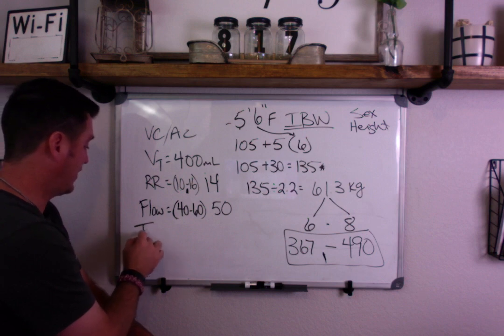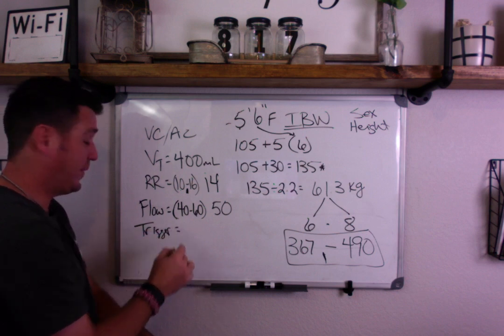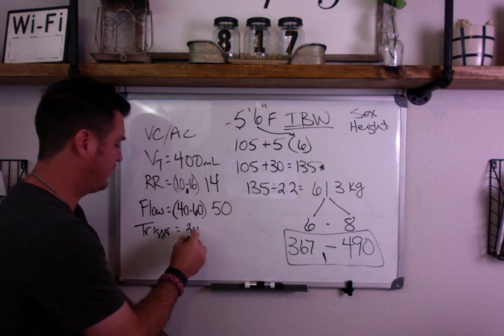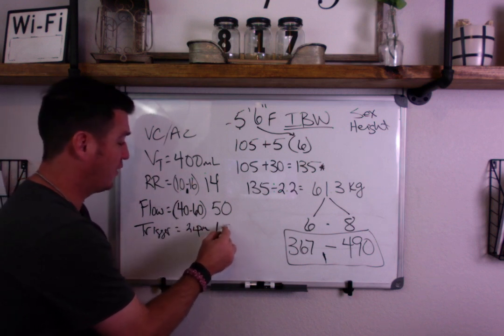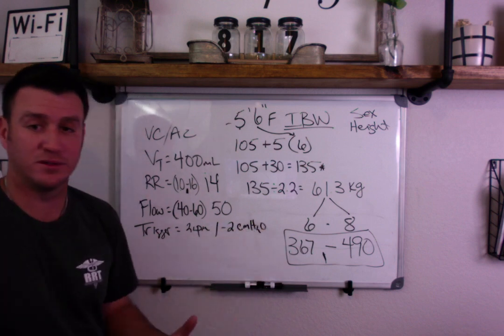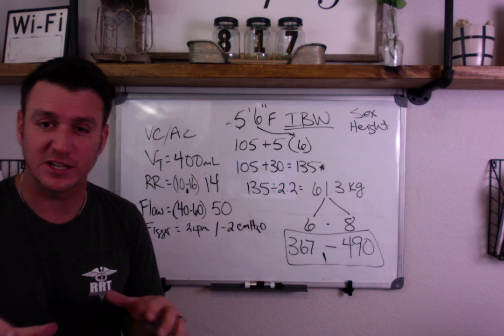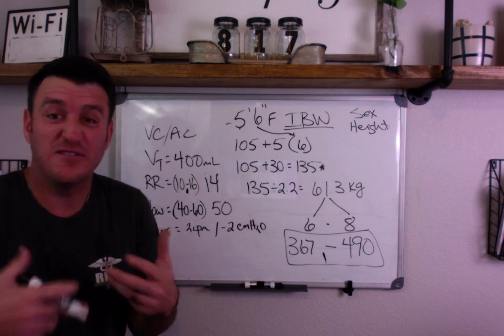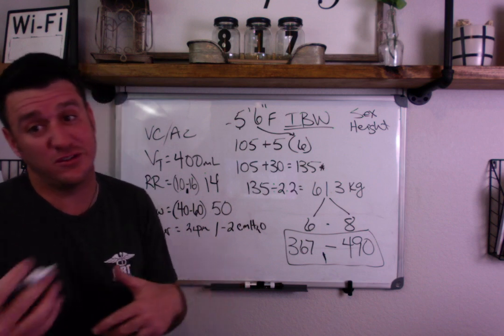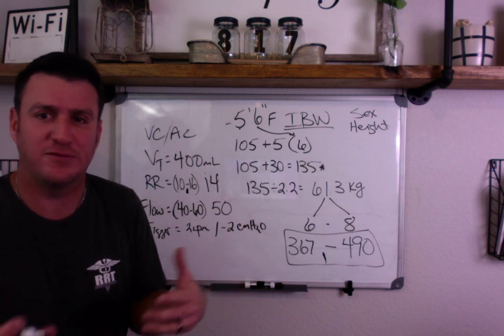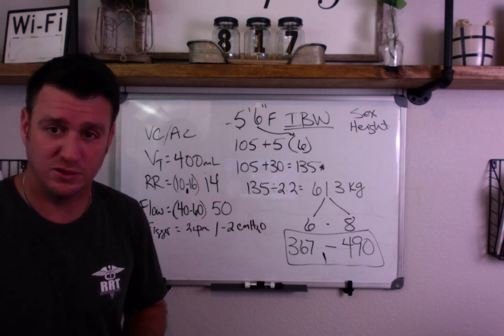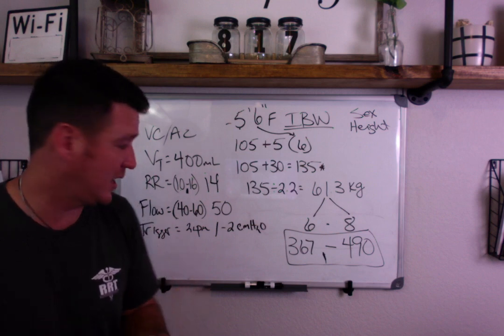We need to set a trigger so the patient can initiate the vent. This is a flow setting. You can start flow at 2 liters per minute or if you're going pressure, you can do negative 2 centimeters of water pressure. Those are typically good starting spots when you're talking about flow. And then, of course, you assess if it's too sensitive. You increase it. You make it harder to trigger. If it's not sensitive enough, then you decrease it to make it easier for them to trigger the vent.